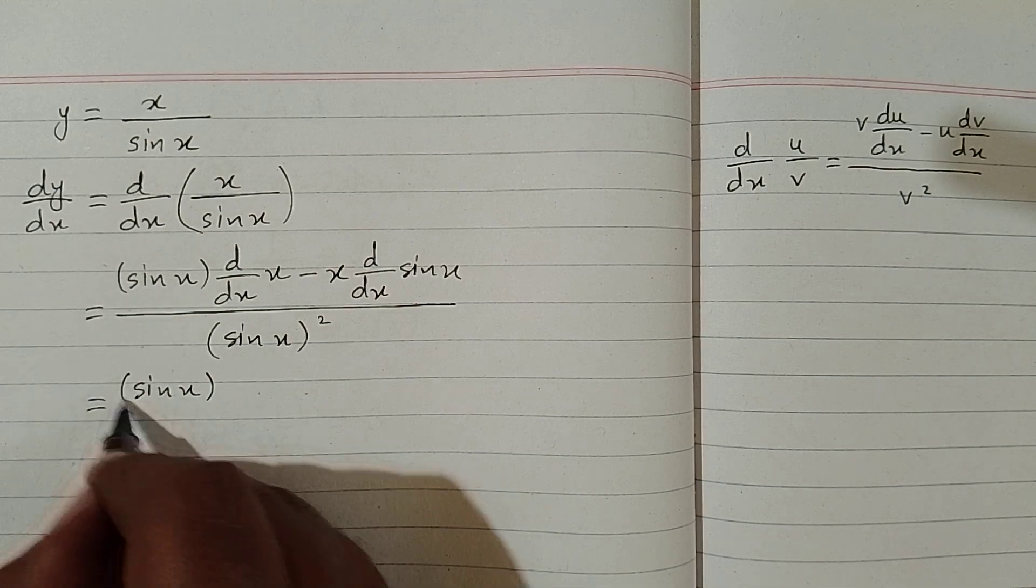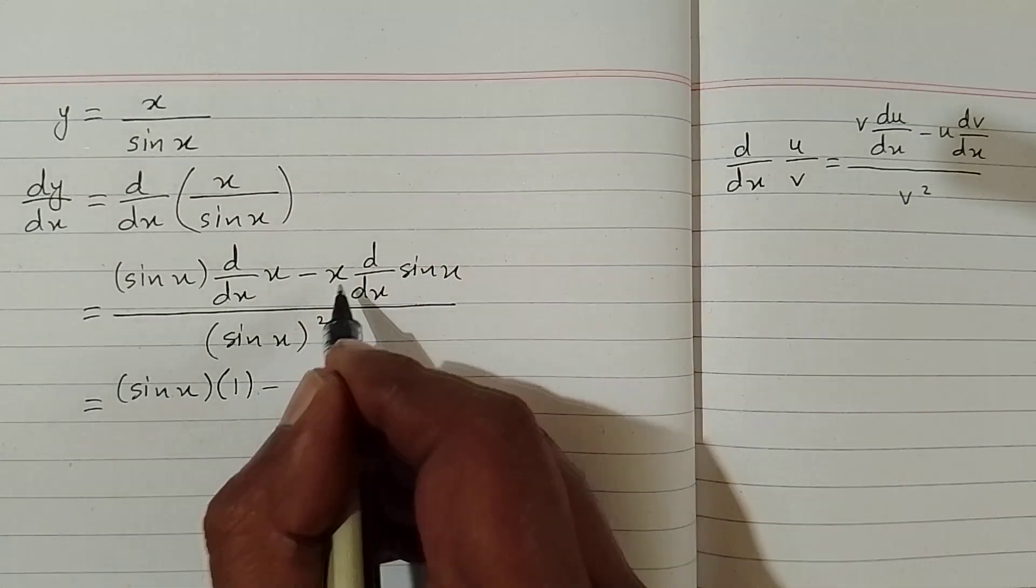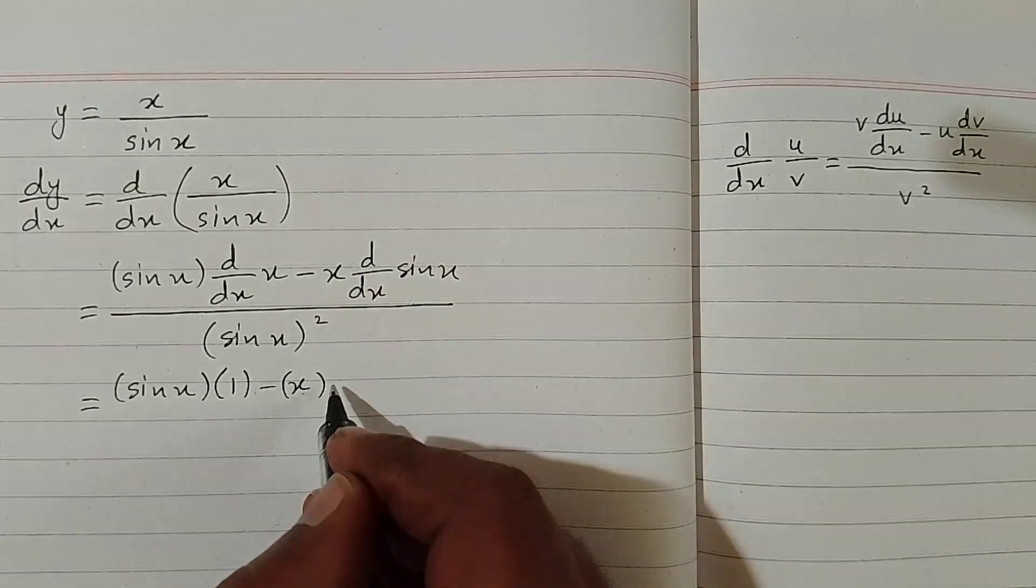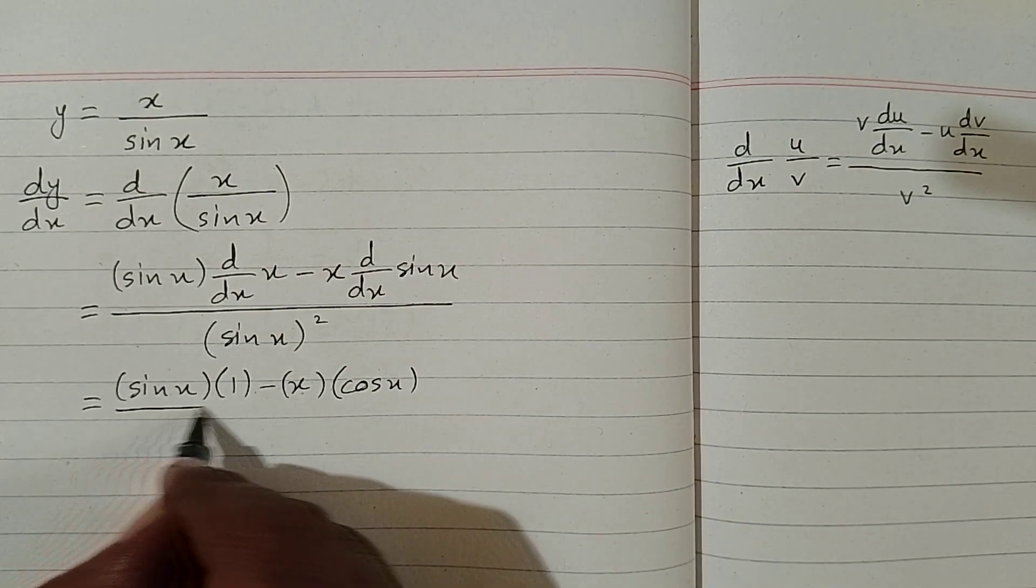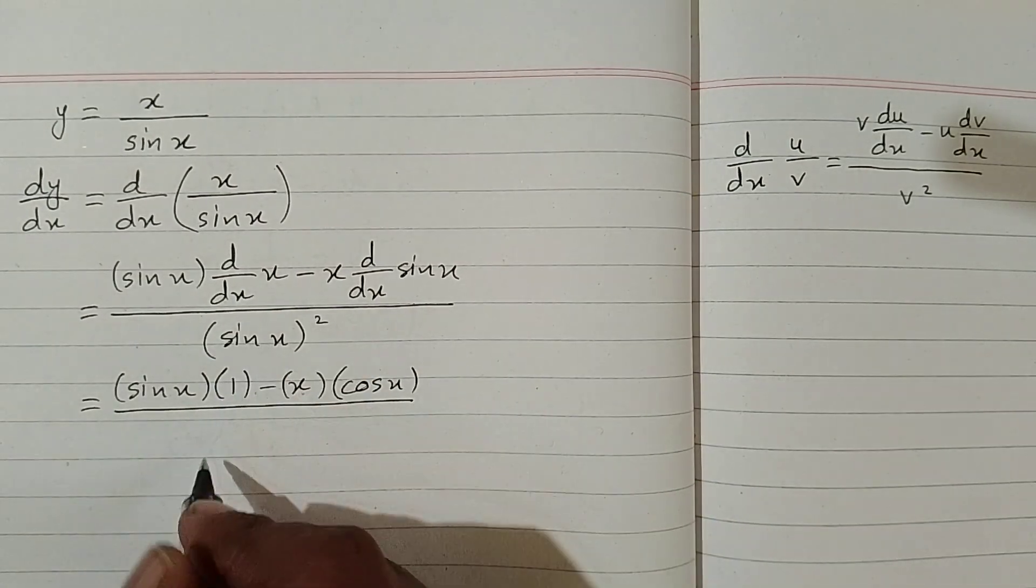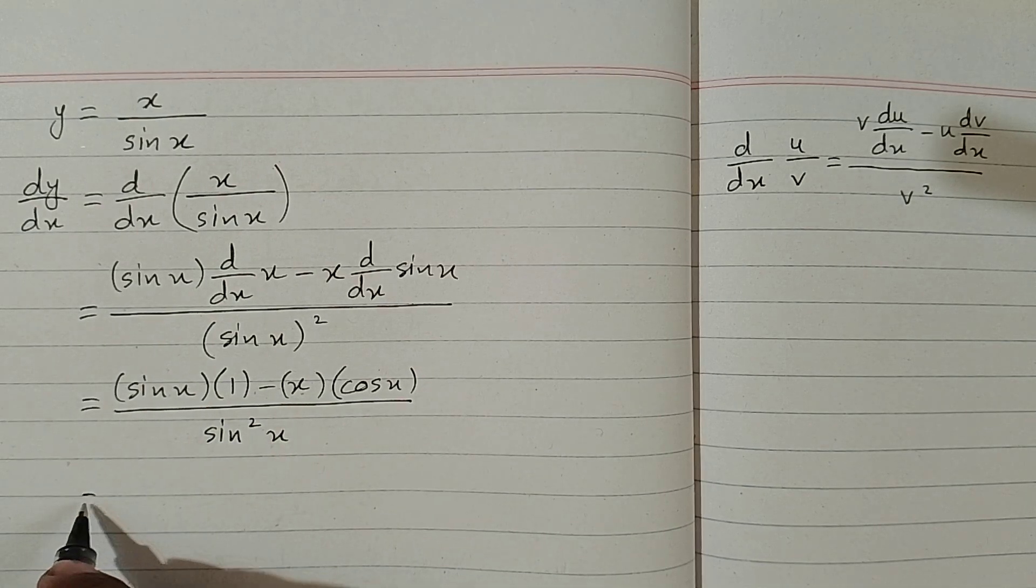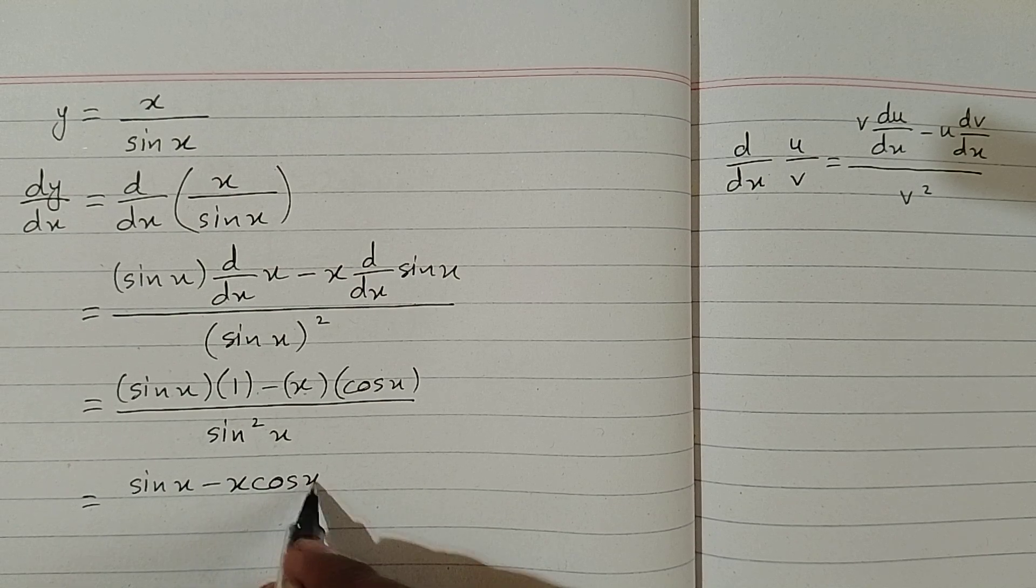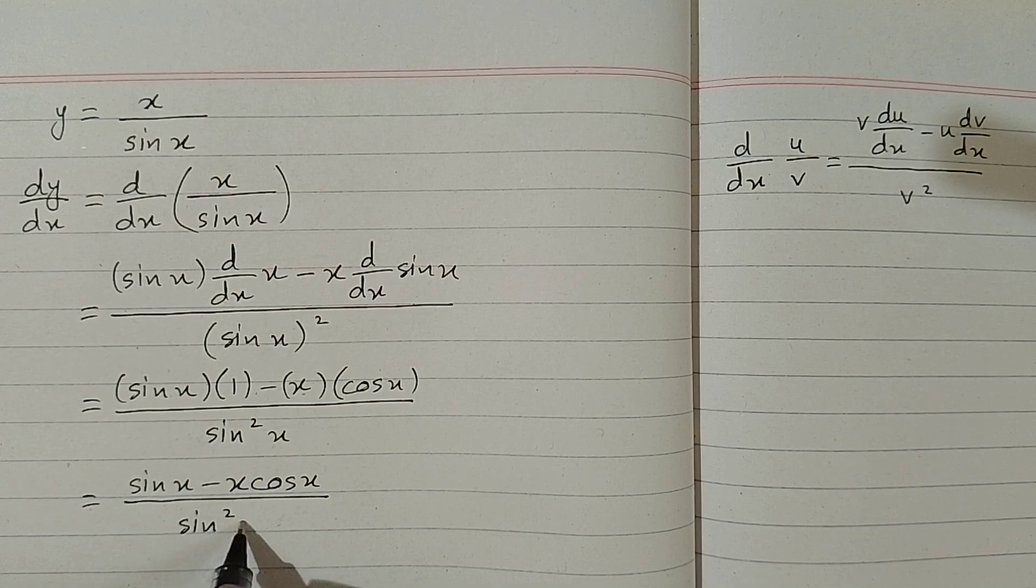Now first we will write sin x, then the derivative of x is 1, and here first we will write x and the derivative of sin x is cos x. And square of sin x can be written as sin squared x. So the final answer is sin x minus x times cos x over sin squared x.